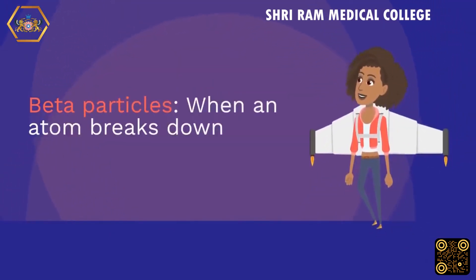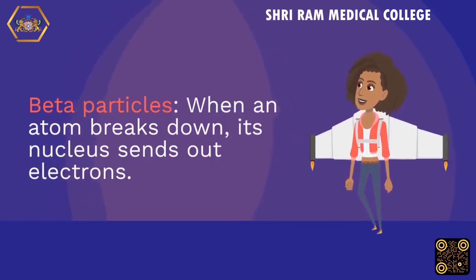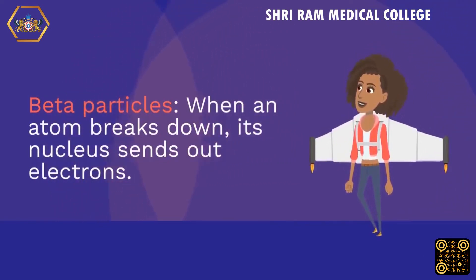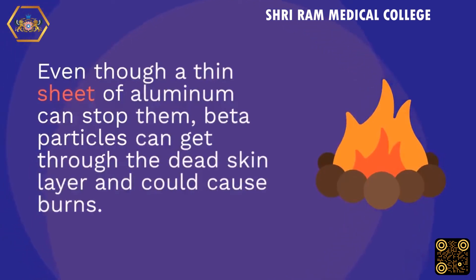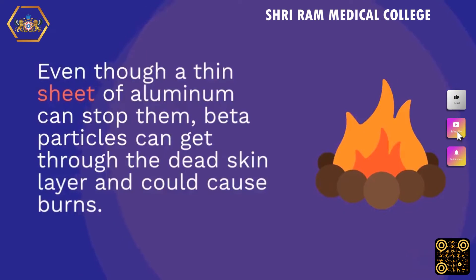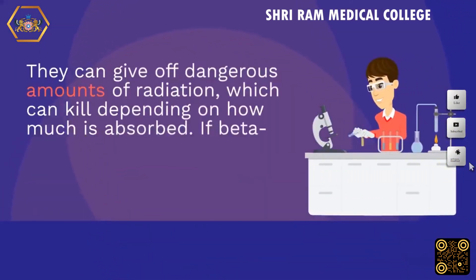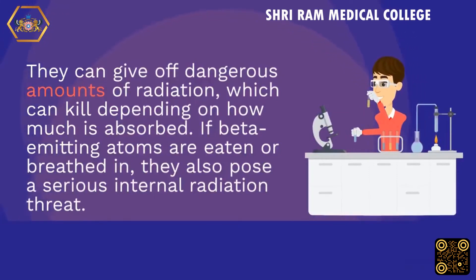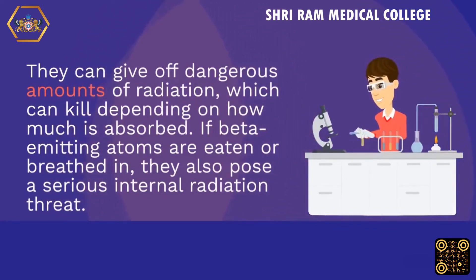Beta particles: when an atom breaks down, its nucleus sends out electrons. Even though a thin sheet of aluminum can stop them, beta particles can get through the dead skin layer and could cause burns. They can give off dangerous amounts of radiation, which can be lethal depending on how much is absorbed. If beta-emitting atoms are eaten or breathed in, they also pose a serious internal radiation threat.